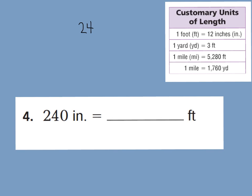So let's look at our chart to see how many inches equals one foot. We know 12 inches equals one foot. So if we have 240 inches, how many feet would that be? We're going to divide 240 by 12. Looking at our hundreds place, 24 tens divided into 12 groups gives us 2 tens in each group, so 2 times 12 is 24. Subtract and bring down the 0. 12 goes into 0 zero times, so the answer is 20 feet. You can always check it with multiplication: 20 times 12 does equal 240.